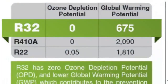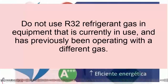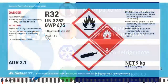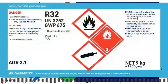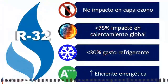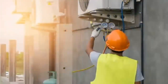1. R32 refrigerant is classified as A2L — slightly flammable — with a global warming potential of 675. 2. Refrigerant manufacturers have clearly stated that R32 refrigerant is not suitable for retrofitting. 3. A system originally designed for R410A will not have accounted for the safety factors required when using an A2L refrigerant, and could create a significant safety hazard. R32 has better efficiency and around 10% more capacity than R410A, depending on the application and system design.